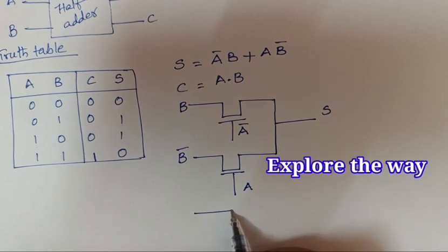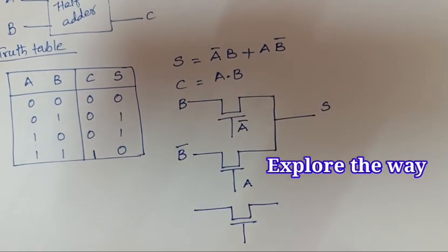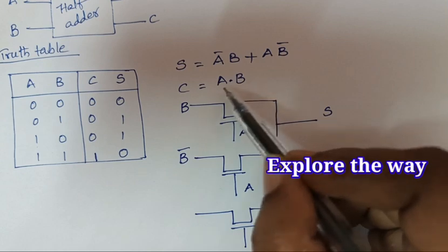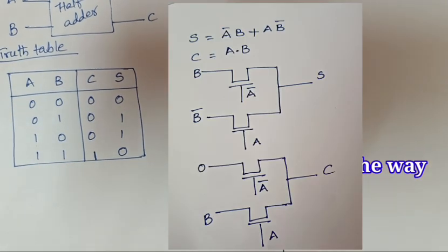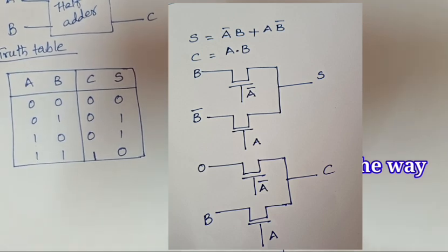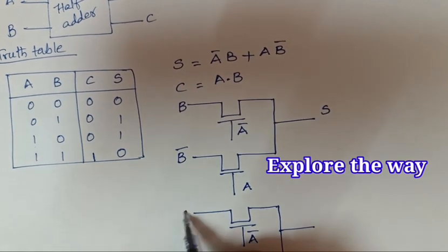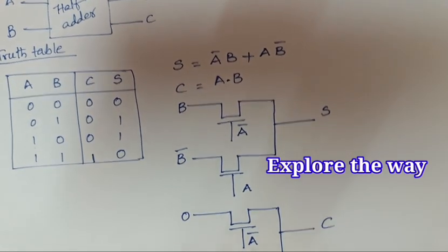Here I am taking two NMOS transistors. For the term A·B, the control input is A and the data input is B. For the second term, when A̅ equals 1, it produces 0, so I am adding 0 here. This gives us the carry output.